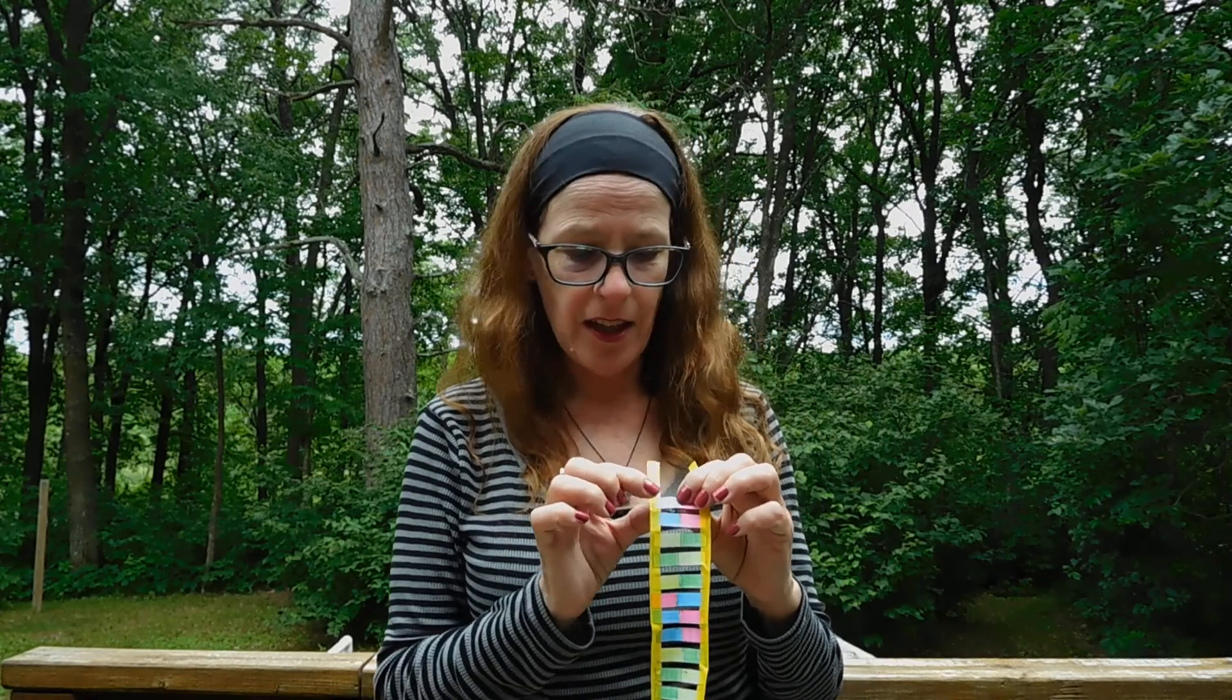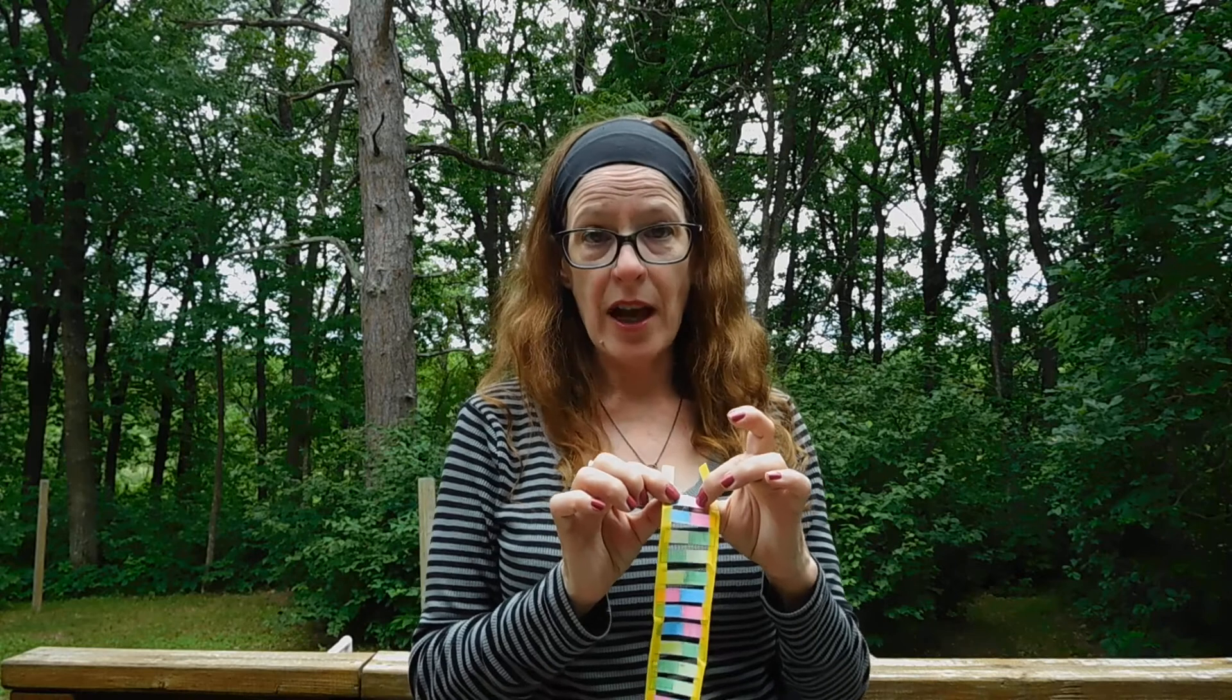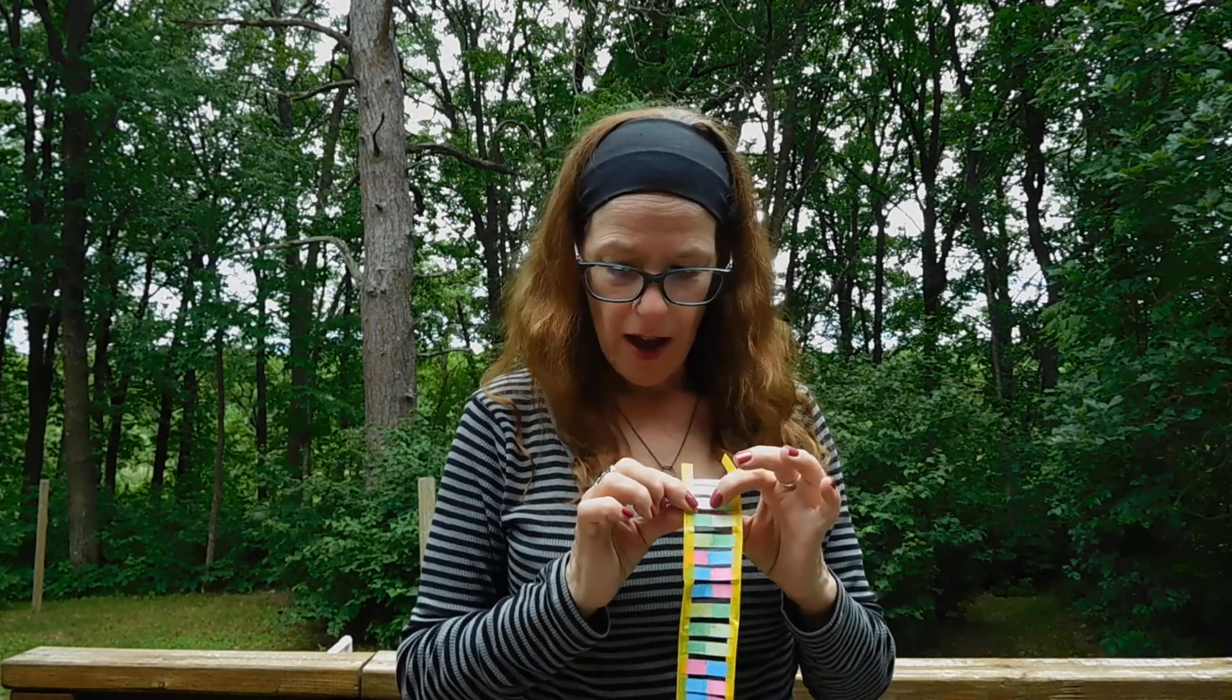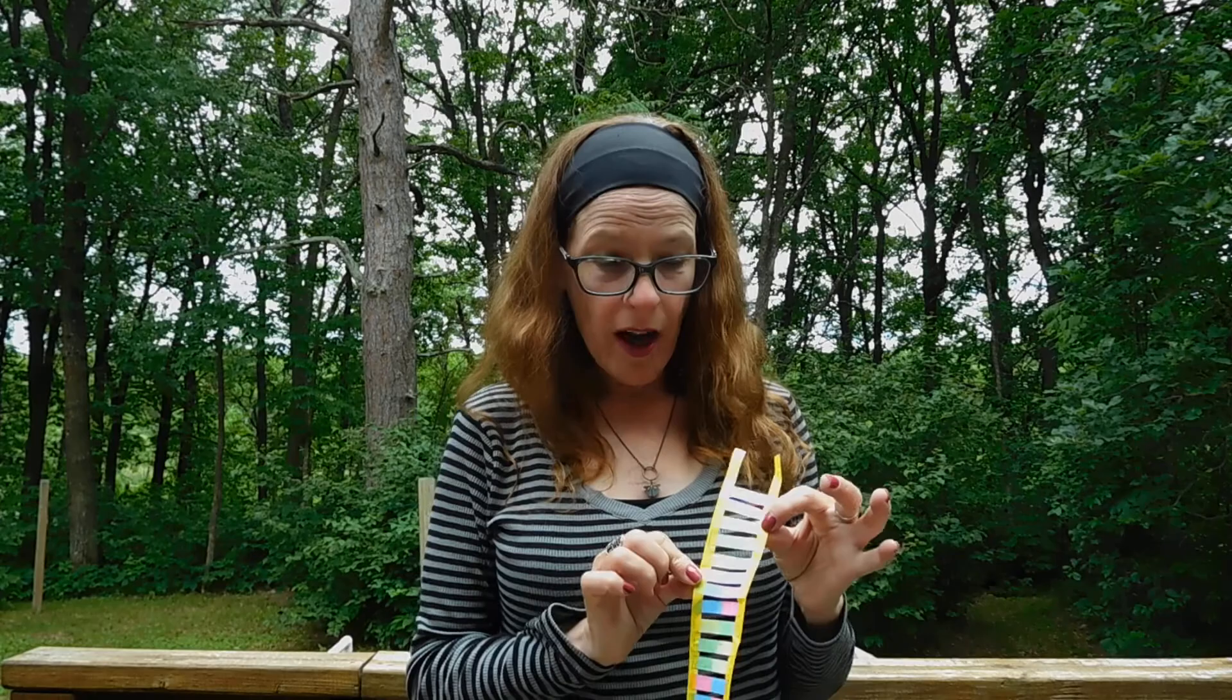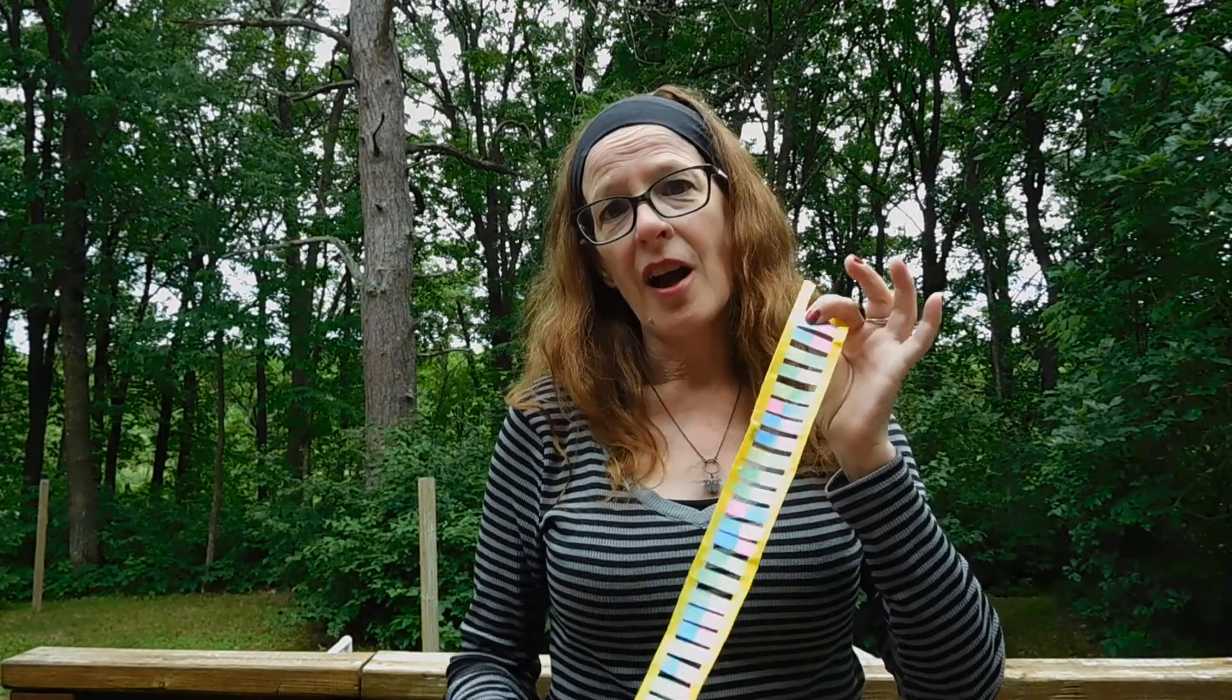And the opposite of that base pair is going to come in and match with that. So where you have the thymine, an adenine will match with it. And where you have the cytosine, a guanine will match with it. Or where you have the guanine, a cytosine will match with it. So you only need one half of your DNA molecule for your DNA to be able to replicate. So DNA holds all of your physical traits and your characteristics, your physical characteristics. And now you know a little bit more about the shape of the molecule and the bases that form it.